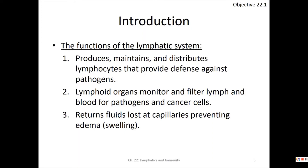Producing, maintaining, and distributing lymphocytes gives us defenses against pathogens — a microbe, a germ, something that can make you sick, usually things like viruses and bacteria. Right now we're dealing with COVID-19. These lymphoid organs monitor and filter a fluid called lymph and also blood, which may contain pathogens like viruses, bacteria, fungal infections, protozoan infections, or even cancer cells.